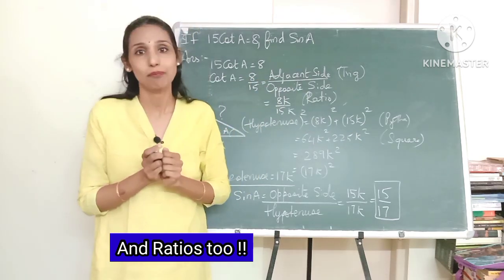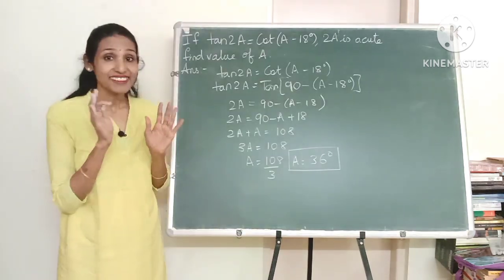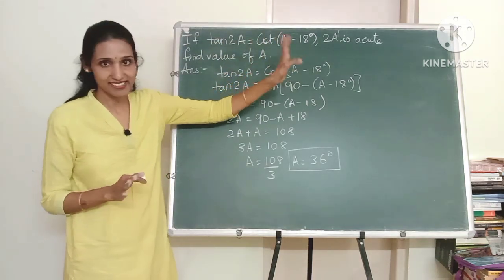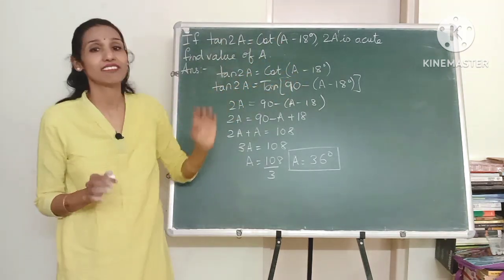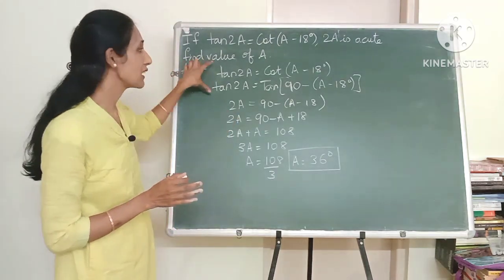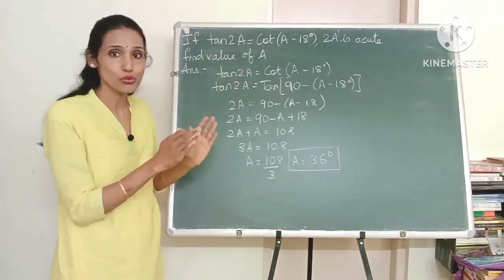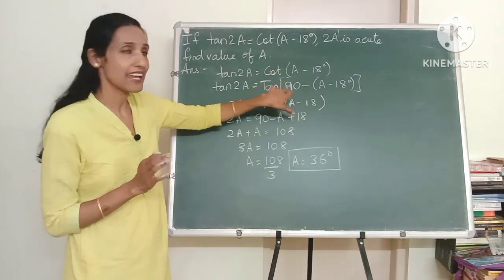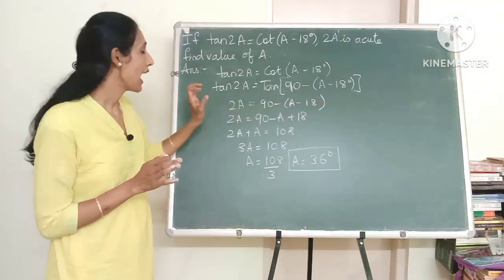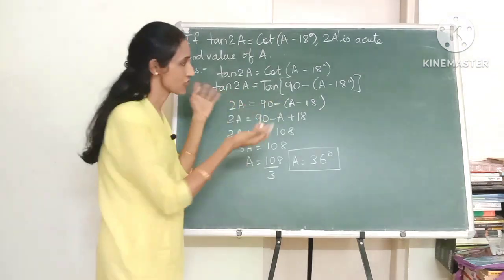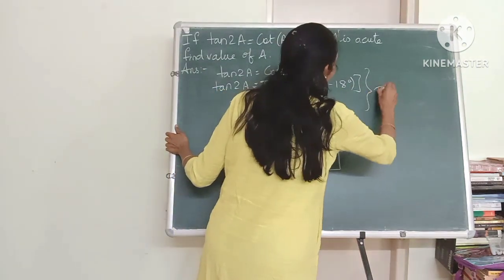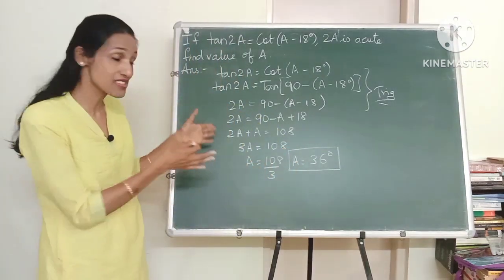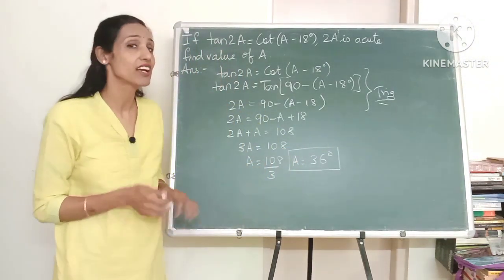Now one more example before we conclude. So in this example if tan 2A is cot of A minus 18 degrees we have to find the value of A. So as you can see in the first two steps I have used trigonometric concepts. So I have written cot as tan of 90 minus theta and then equated the two angles. So definitely we needed trigonometry concepts in these two steps. But after that do you see any trigonometry being done here? No.